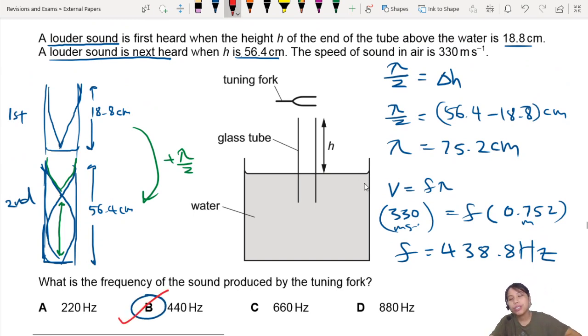Fun fact, by the way, guys. If you are a musician, 440 is the standard tuning fork for the note A. A on the piano. A on the guitar. A on the violin. Okay. That's 440 Hz.